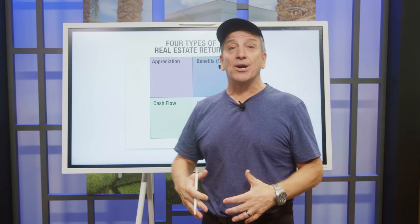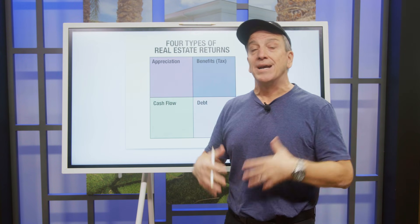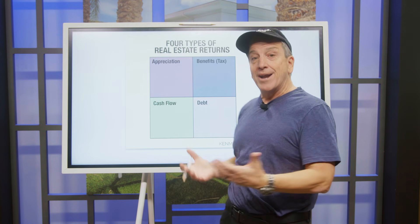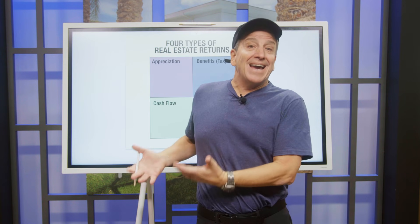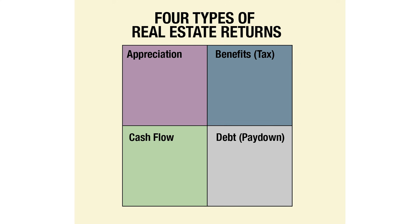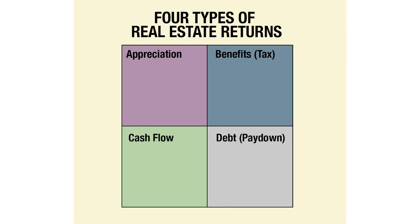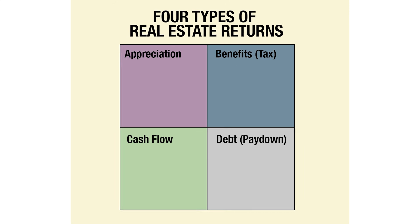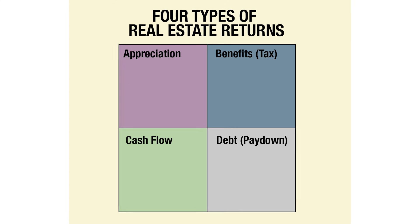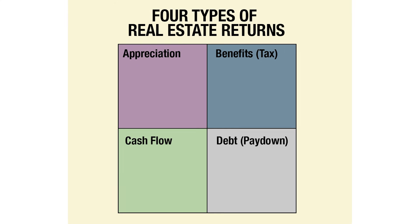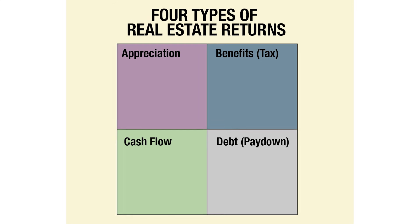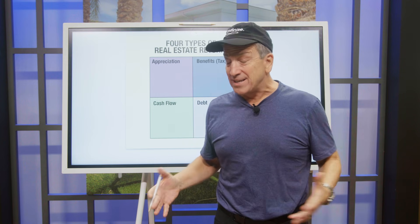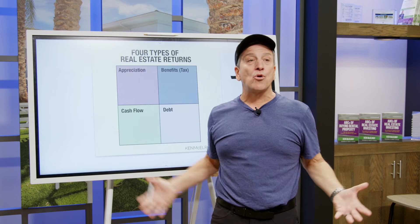So this video is what I call the real estate quadrant. I use this a lot for teaching. I haven't brought it out yet to you guys, but we're doing it today. These are the four types of real estate returns. So when we're talking about deals with my acquisition folks, my property management folks, we're usually in one of these categories.